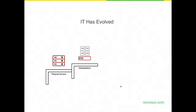Then we moved into the virtualization era, and that's where in the data center we saw consolidation. We saw multiple virtual machines running on single server hardware, which reduced the amount of physical servers. So we've consolidated hardware and the equipment running in our data centers.